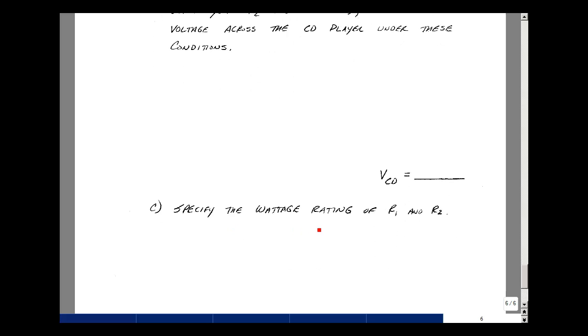Lastly, could you specify the wattage ratings of R1 and R2 under these two scenarios of 420 milliamps and 250 milliamps? In other words, what's the maximum power dissipated for R1 and R2? This is exam number two, and you have 60 minutes to complete this.